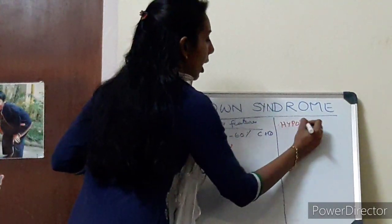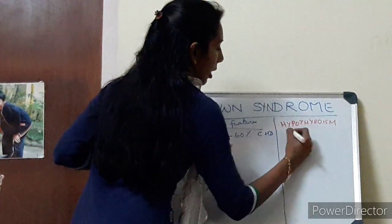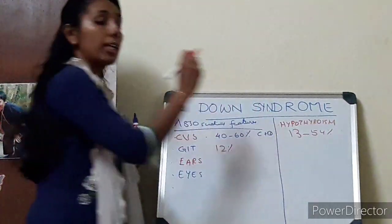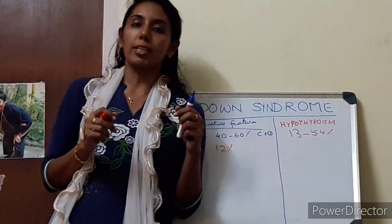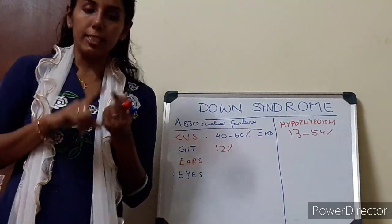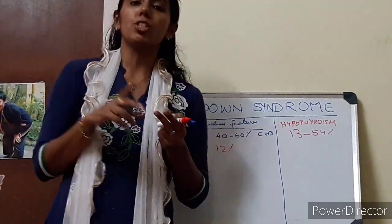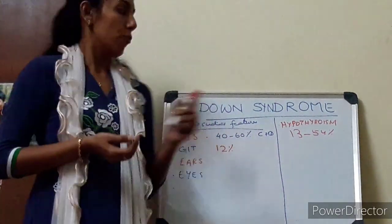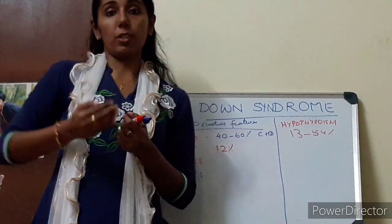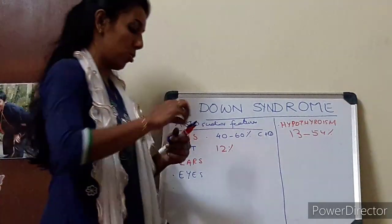They have more risk for hypothyroidism — around 30 to 54% increased risk of hypothyroidism in Down syndrome cases. So evaluate the child at the neonatal period, at 6 months of age, and also annually for the development of hypothyroidism. Later, we may also have to screen them for autoimmune hypothyroidism.